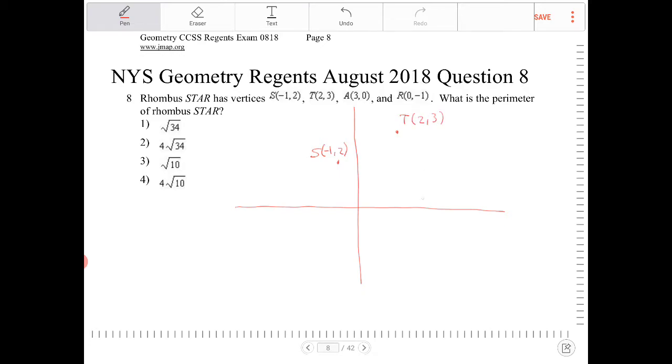A is located at (3,0), which is roughly over here. And R is located at (0,-1), which is over here roughly.